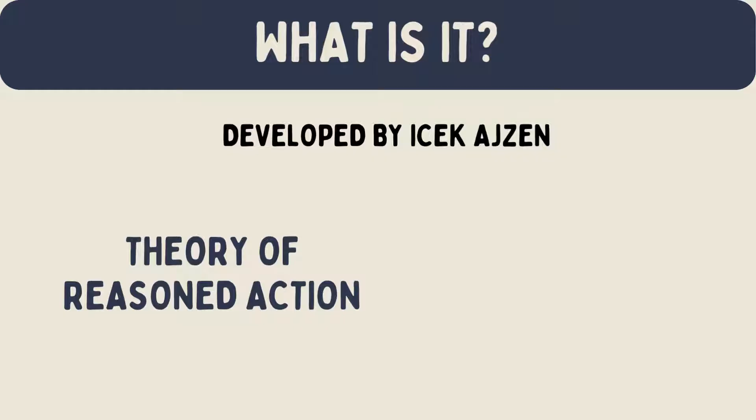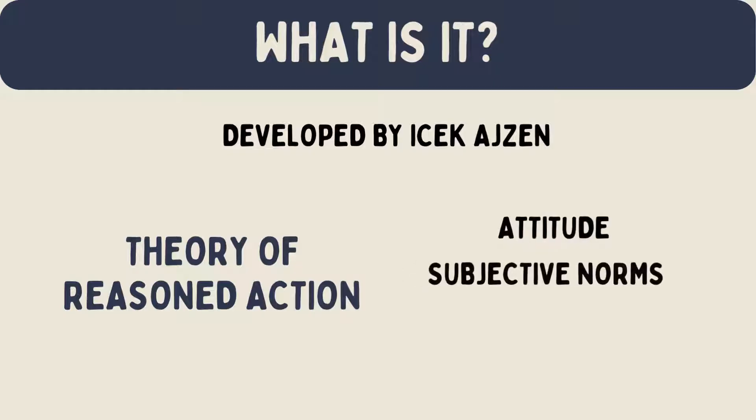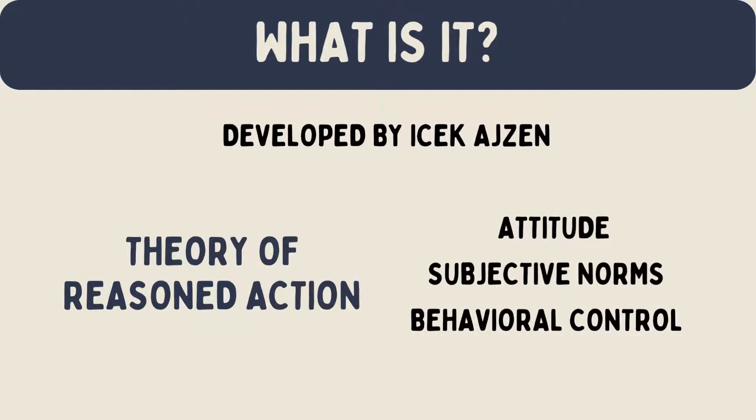The main idea is that a person's behavior is influenced by three things: their attitude, subjective norms, and perceived behavioral control.